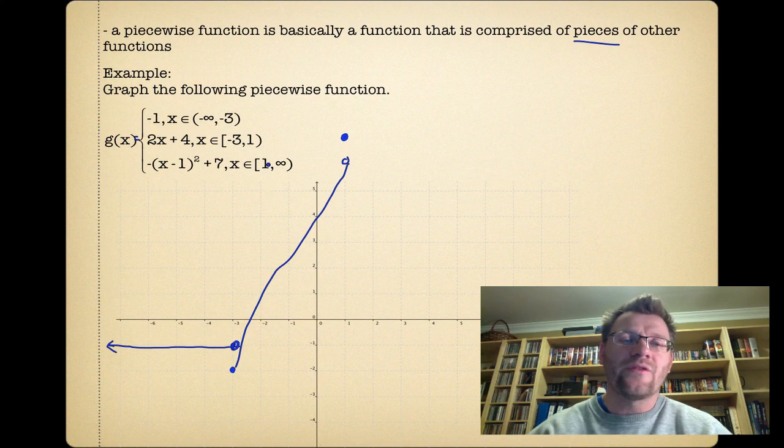And we know it opens downward. So we could plug in other values if you want. Maybe we'll plug in a three. If we plug in a three, we get three minus one, which is two, two squared is four, negative four plus seven is three.